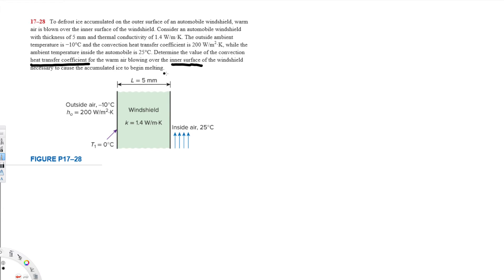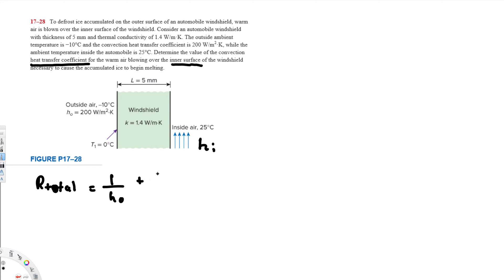We are asked to find the heat transfer coefficient on the inner surface, h_inside. H_outside is provided, K is provided, and h_inside is what we are trying to find. Now the total thermal resistance R_total is connected with all this information — R_total equals 1 over h_outside plus L over K plus 1 over h_inside.